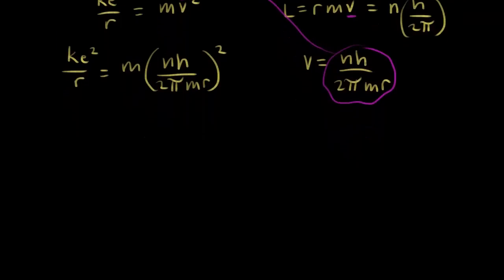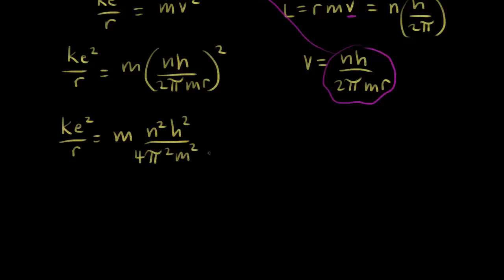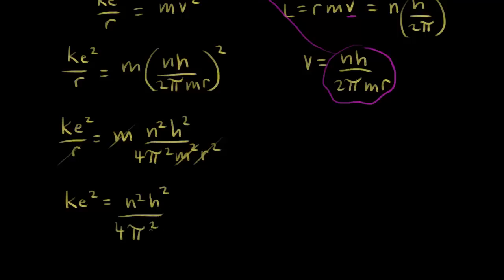Continuing with the algebra, we have K E squared over R equals the mass times, squaring everything in parentheses: N squared, H squared, over four pi squared, M squared, R squared. We can cancel one of the M's and one of the R's. So now we have K E squared equals N squared H squared over four pi squared, with one M and one R remaining.